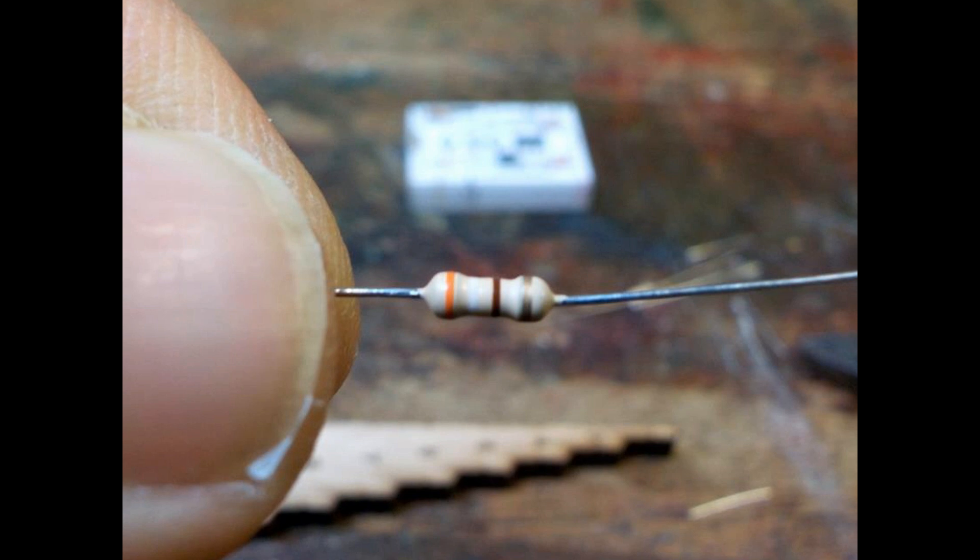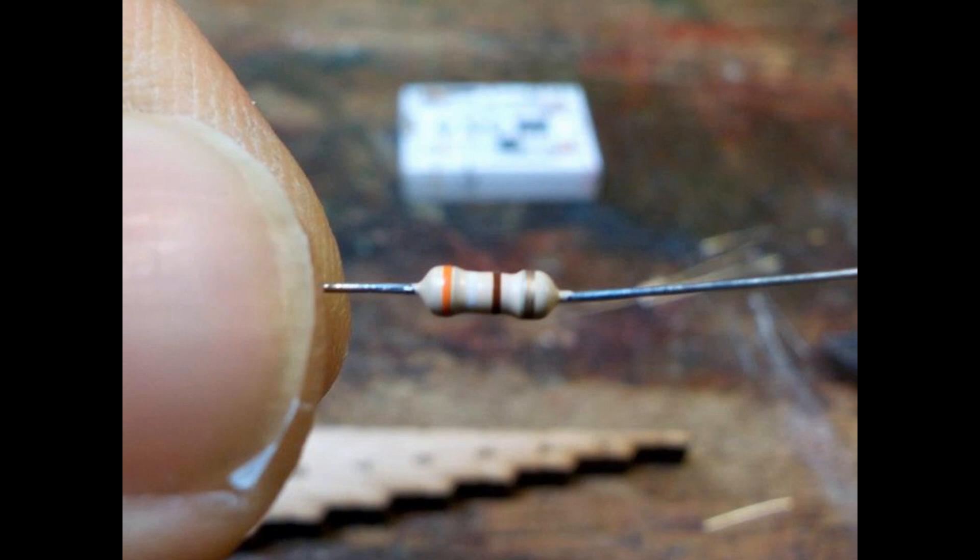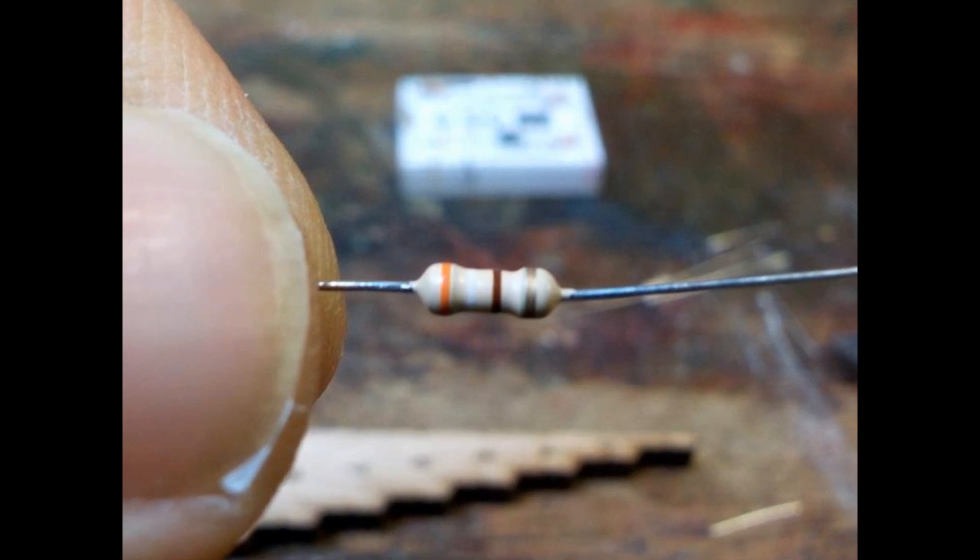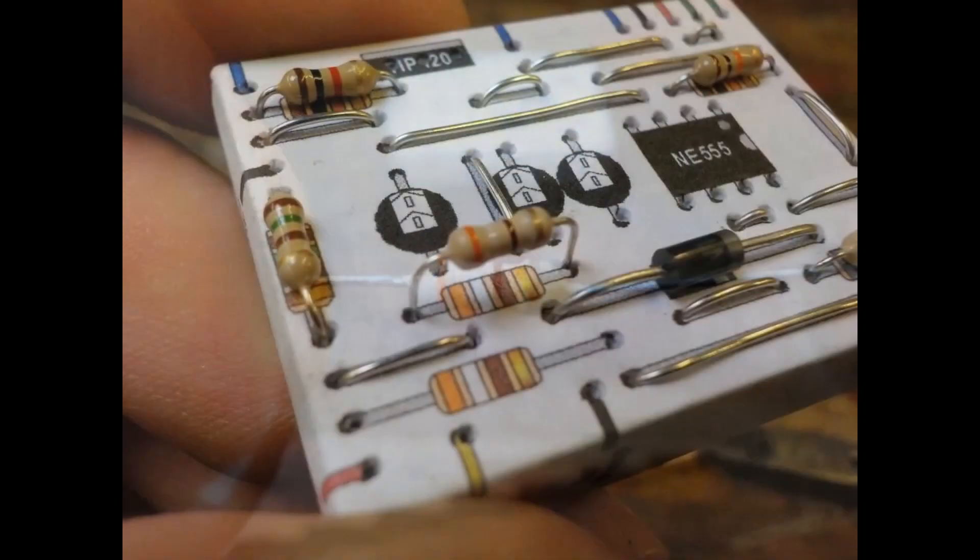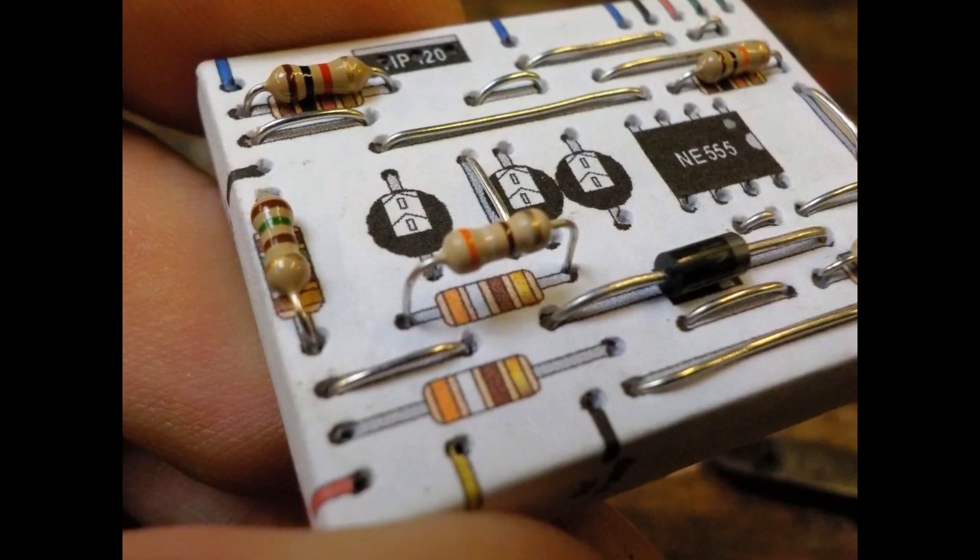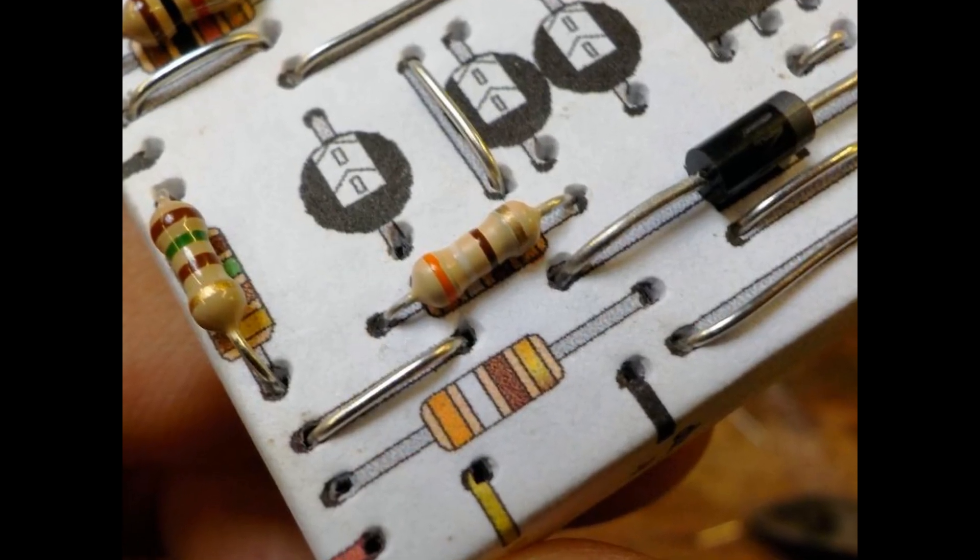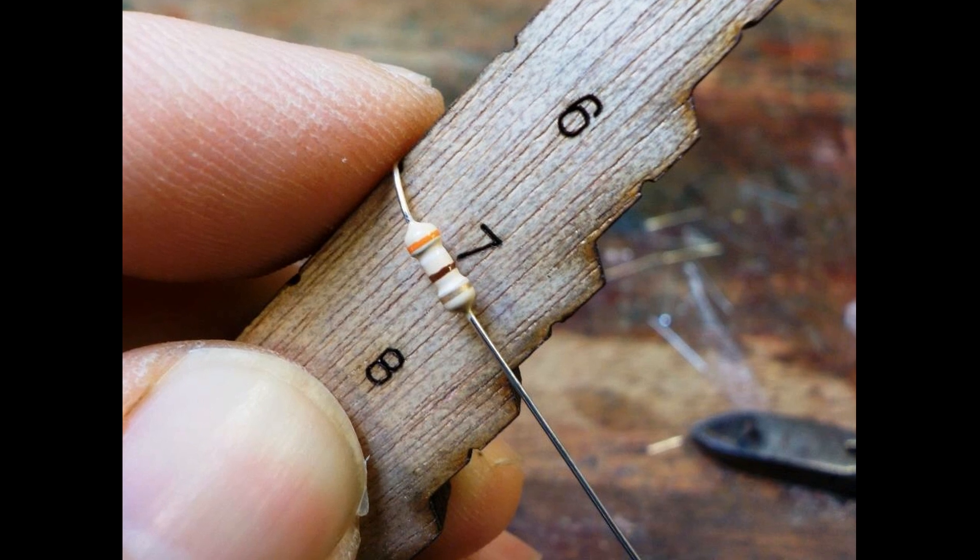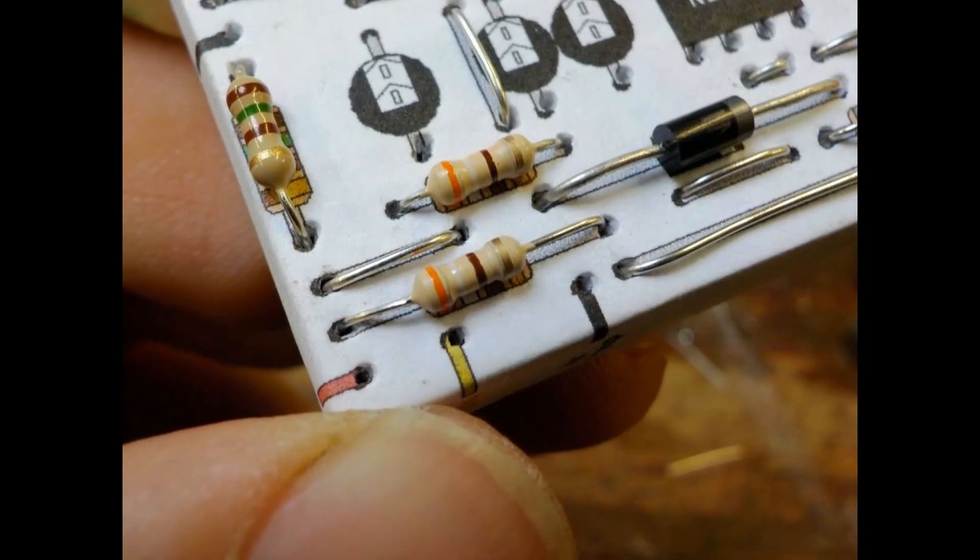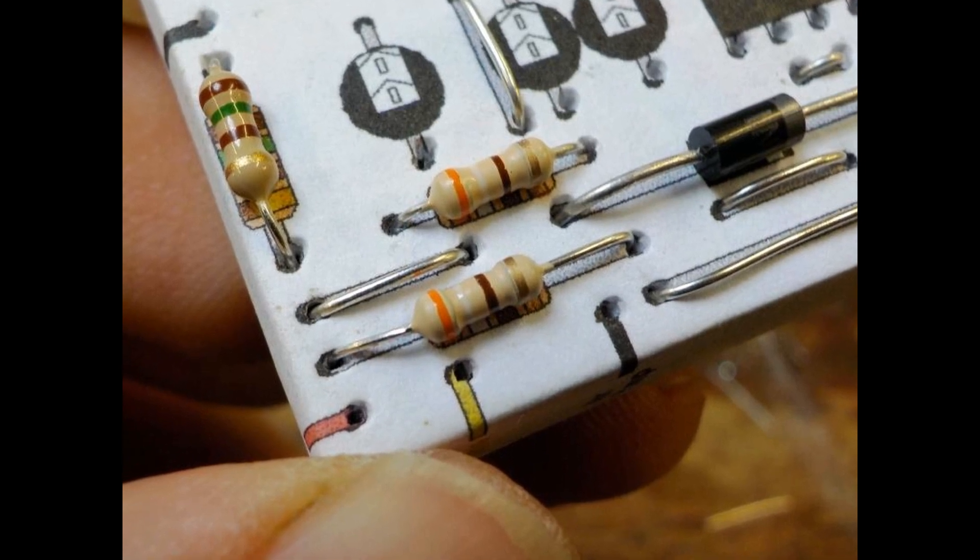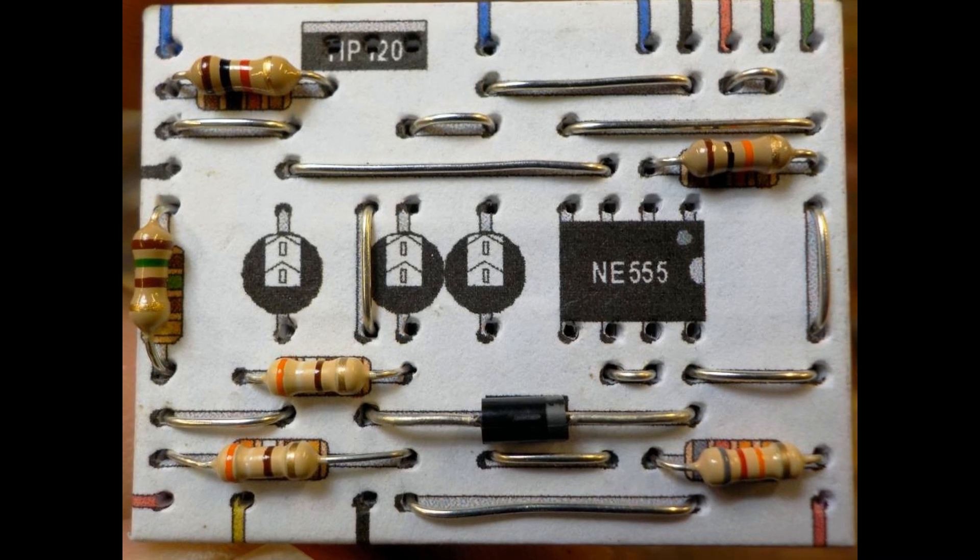The two last resistors have the same value. They have an orange, white and brown stripe. Their value is 390 ohms. Remember it doesn't matter which way round resistors go. The penultimate resistor is five holes long. But just to be confusing, the final 390 ohm resistor is seven holes long. If your circuit looks like this you've done very well. Especially if you haven't done electronics before.